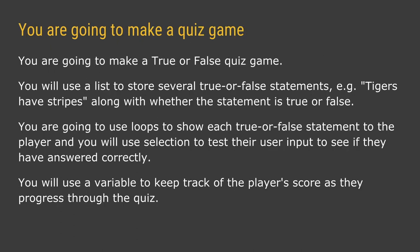So let's look at what we're actually going to be doing today. You are going to be making a true or false quiz game, where people might be asked something like 'true or false, tigers have stripes' and the user will enter true or false at the keyboard. We're going to use loops to show each statement to the player, then use selection — if or else — to test whether the user input is correct, and keep track of their score using a variable.